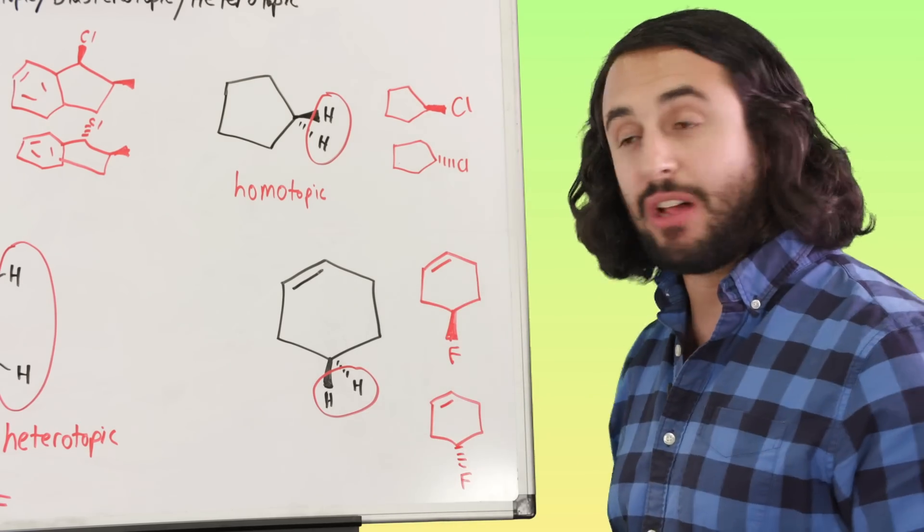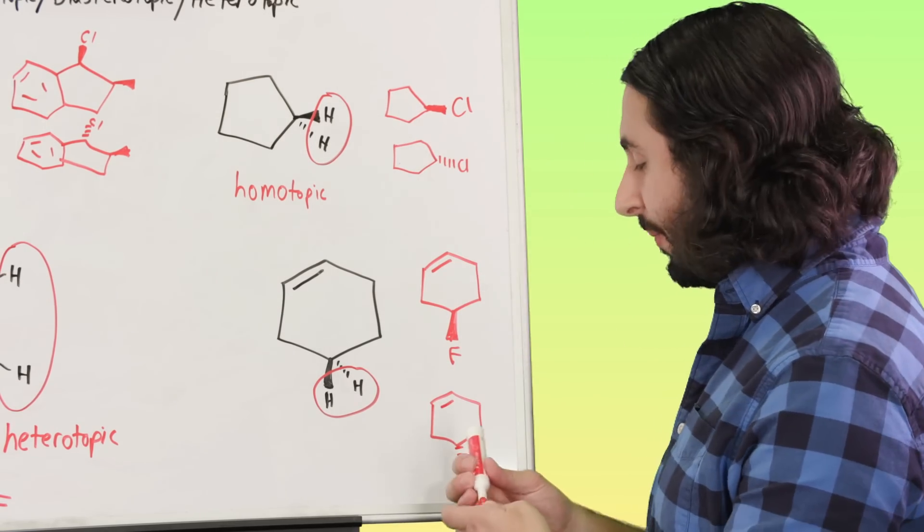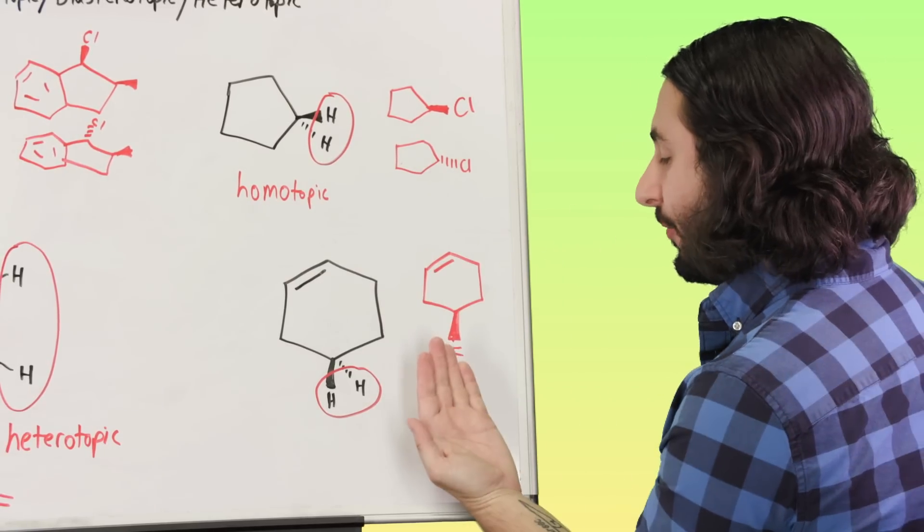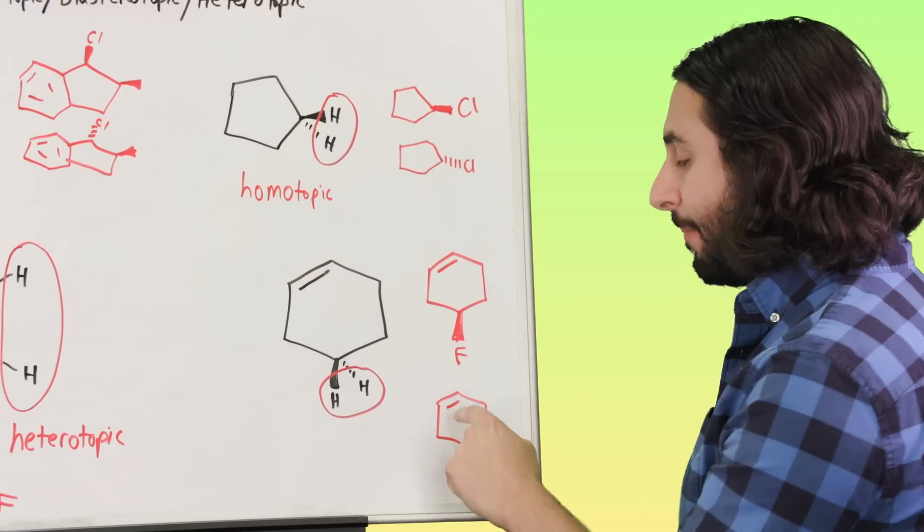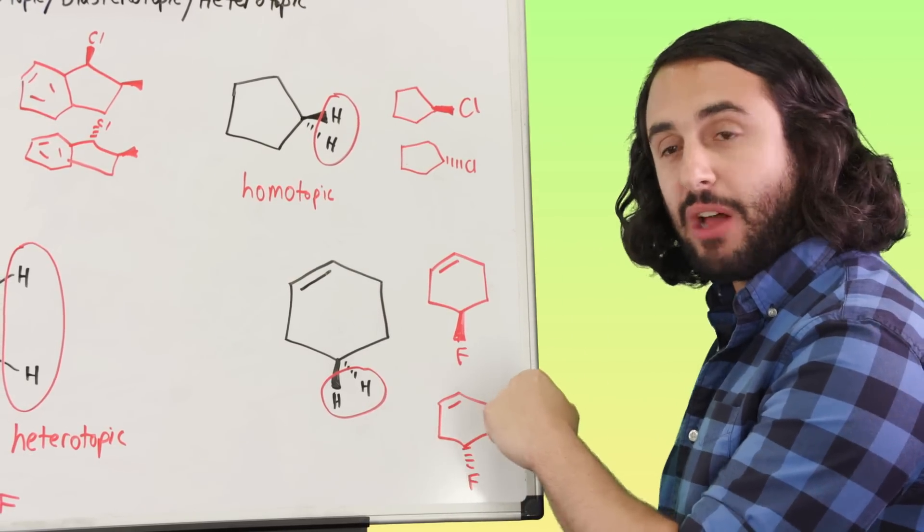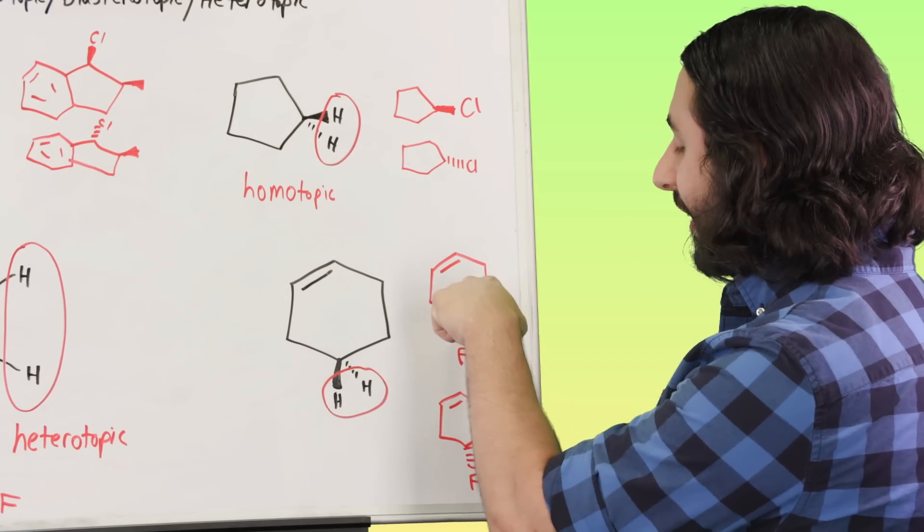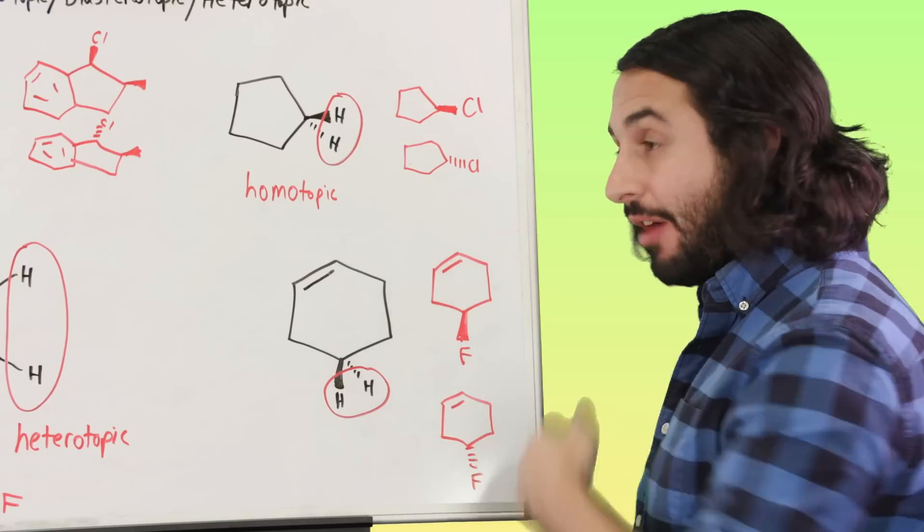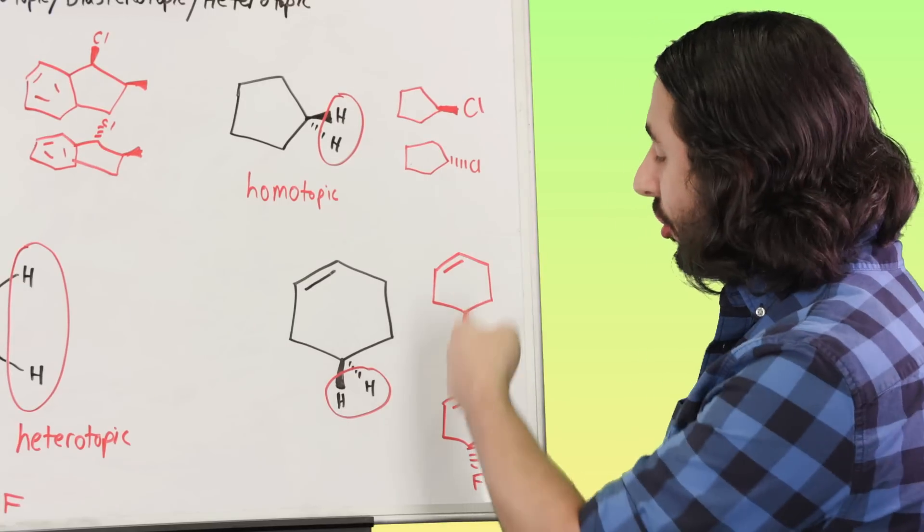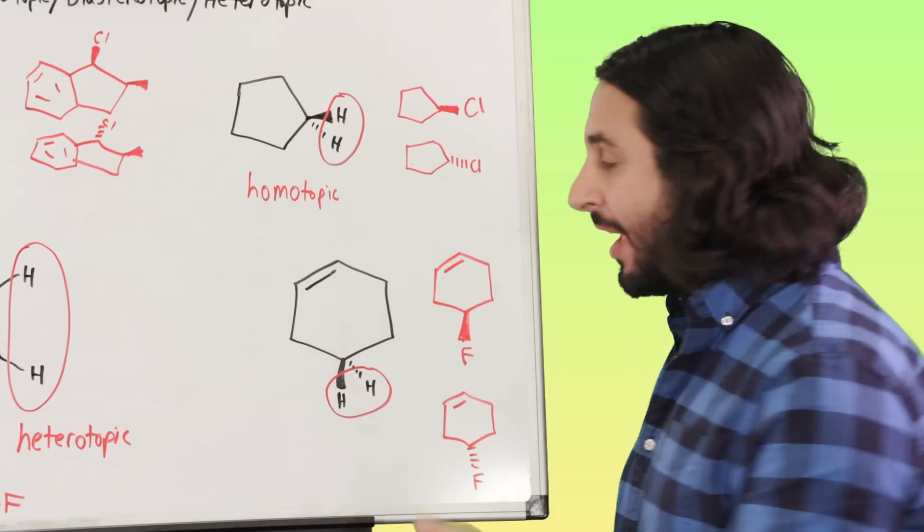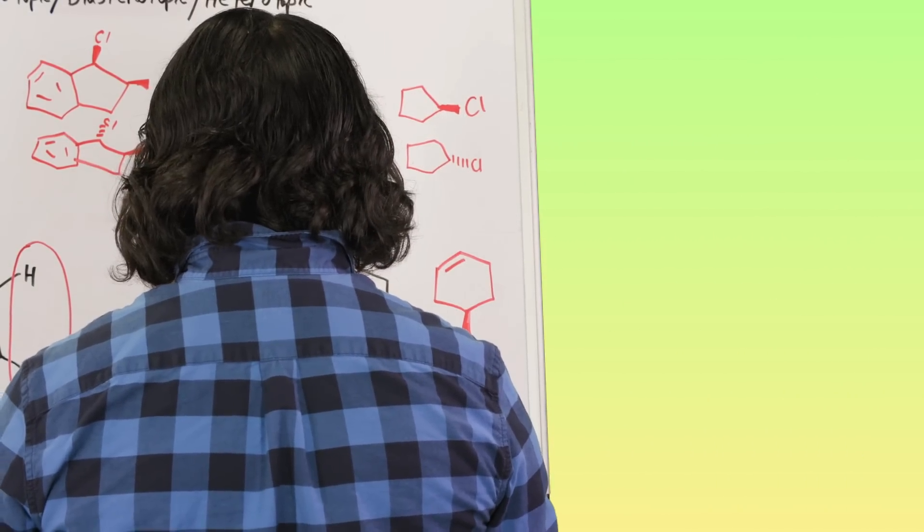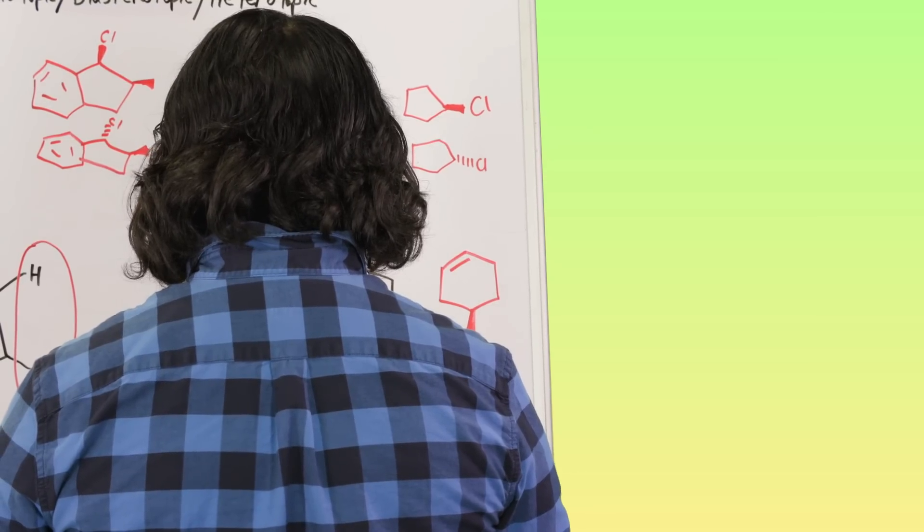These are actually not the same molecule in the same way that those were, because what we could do is we could take this molecule and we could flip it over and the fluorines would line up, but the pi bond would be on the other side of the molecule. So we are generating a chiral center, so we have one chiral center, and it's the opposite stereochemistry at that one chiral center. So these are certainly enantiomers of one another, and for that reason these protons have an enantiotopic relationship.